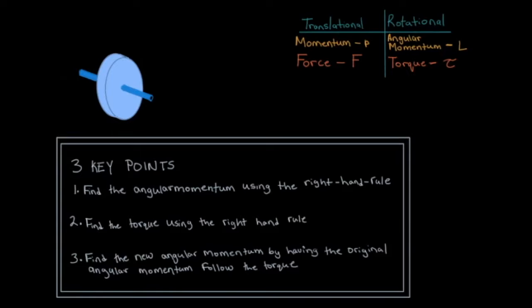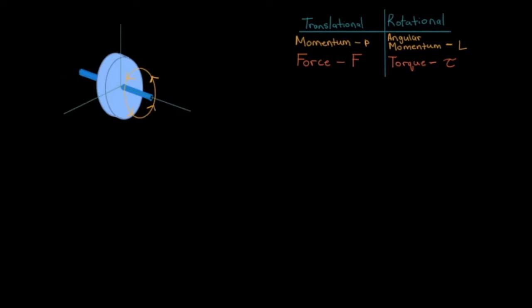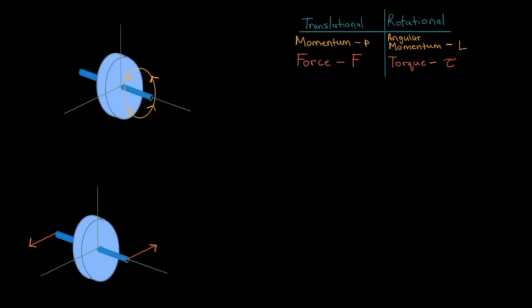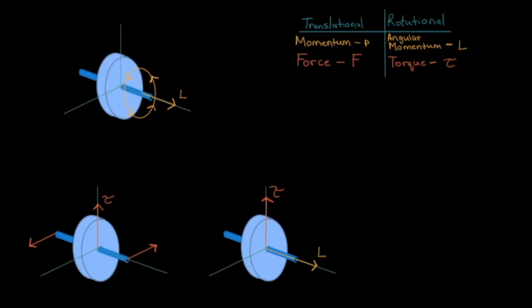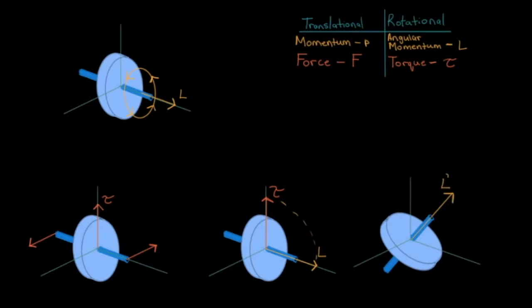To solidify our understanding, let's consider another example. The wheel is still spinning in the original direction; we grab the handles but this time torque it in a different direction. Following the three steps: step one, curl the four fingers of your right hand in the direction of the spin to find the angular momentum. Step two, curl your fingers in the direction of the expected rotation — your thumb will point straight up along the vertical axis, giving us the torque direction. Step three, the angular momentum follows the torque, so those handlebars pivot to follow tau. As you can see, the wheel doesn't rotate with the torque but rather it precesses upward.